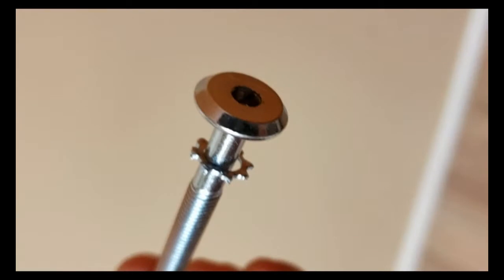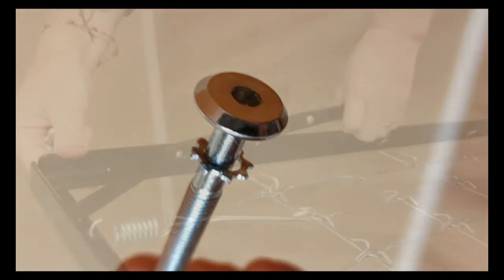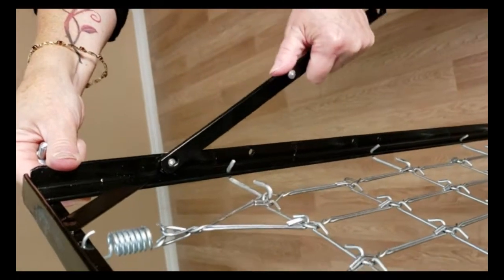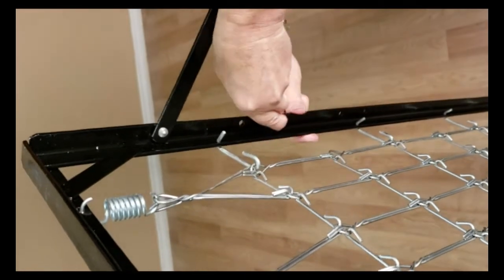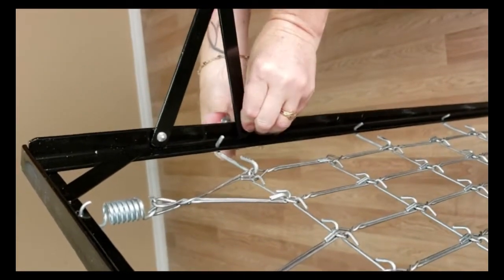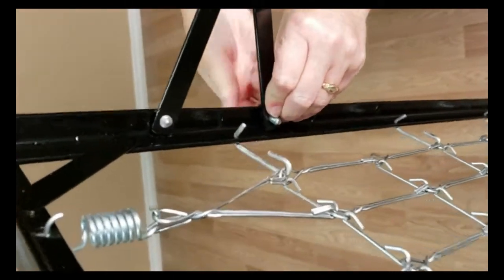Make sure to use a lock washer under the head of each bolt. The spring deck comes with three adjustable height settings. Select the height that's suitable for your child and lock the leg in place using a bolt and a nut.